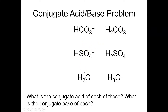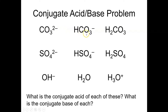What about the identity of the conjugate base of each? To get from an acid to its conjugate base, you remove an H⁺. The conjugate base of bicarbonate is carbonate — that's what you get when you remove an H⁺. The conjugate base of bisulfate is sulfate. The conjugate base of water is hydroxide.